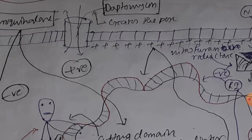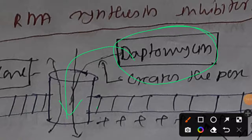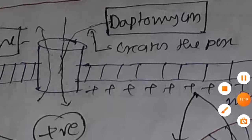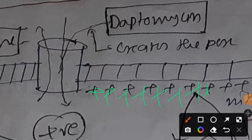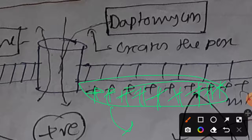This predominant positive charge on the inner side of the membrane causes inhibition of DNA, RNA, and protein synthesis. Daptomycin is mainly useful for gram-positive bacteria — for example, Staphylococcus aureus infections.